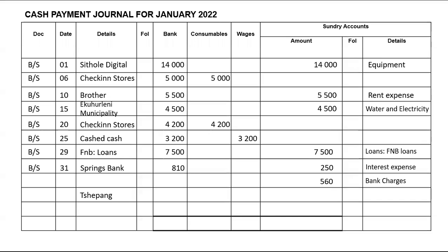Add up everything in the CRJ and for the CPJ you will also have to add everything up — those are your two tools. Please check out the next video for the general ledger as well as the trial balance.